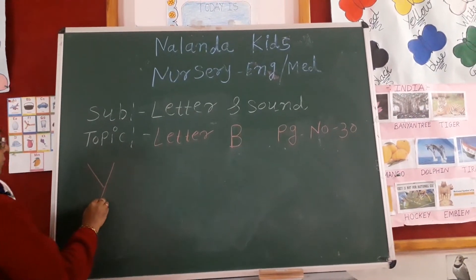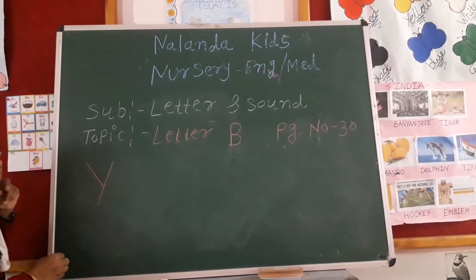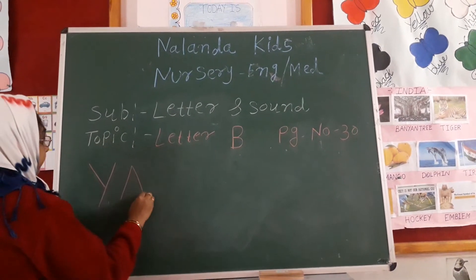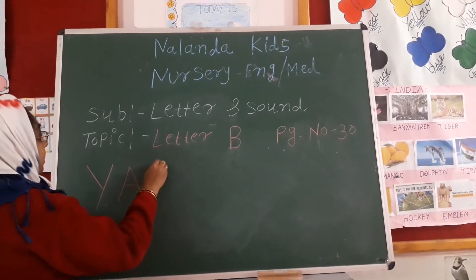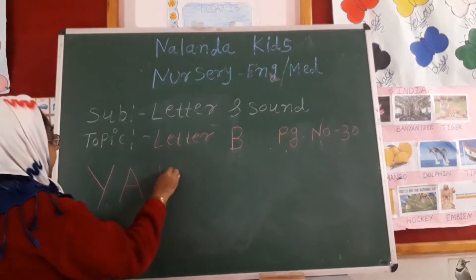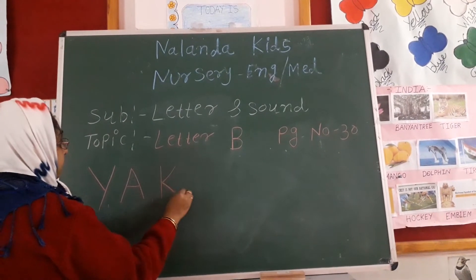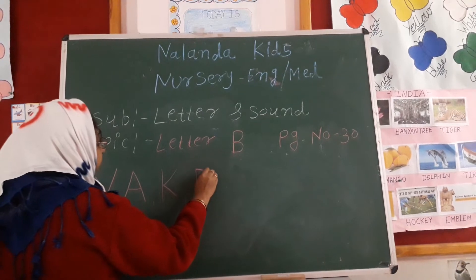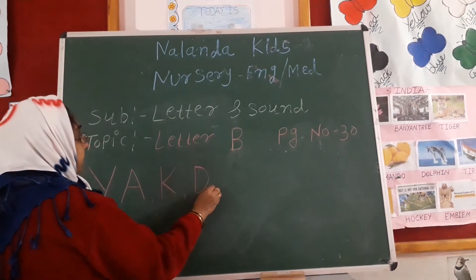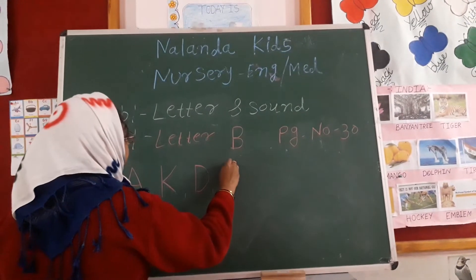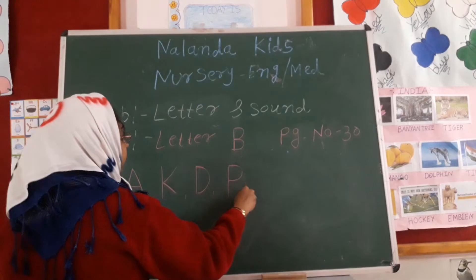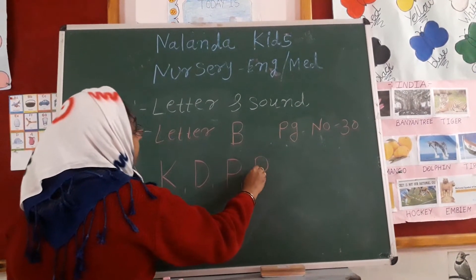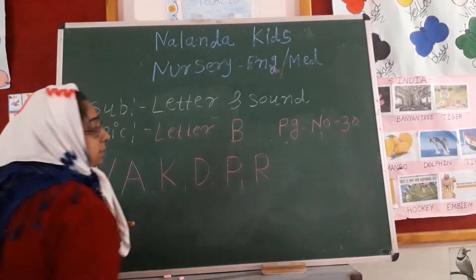Y for Yard, A for Apple, K for Kite, D for Dog, P for Peacock, and last, R for Rabbit. Okay?